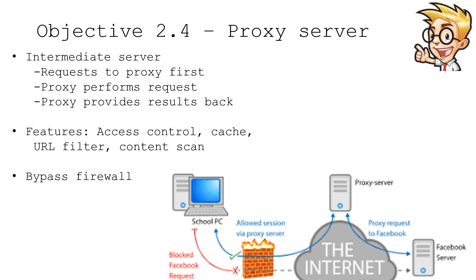Some organizations have installed proxy servers to add additional security to their internet communications. As the name implies, a proxy sits in the middle of the conversation. Users make a request to the proxy, the proxy server makes requests to that third-party service, receives a response, and then forwards it back to the end user. Once everything is checked and looks okay, the response is sent to the user. This means we can put a lot of security controls into a proxy server — it can act as access control requiring a username or password, perform caching, perform URL filtering, and many other security services.